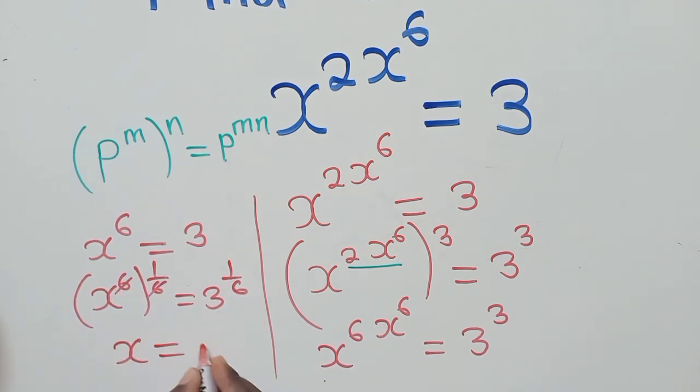We shall remain with x is equal to 3 power 1 over 6 as the solution. Thank you so much for watching. Remember to subscribe. This is C-Chamber Jacko, bye-bye.